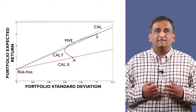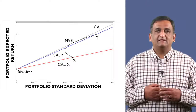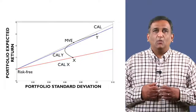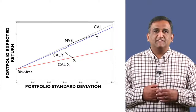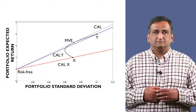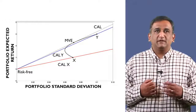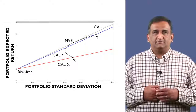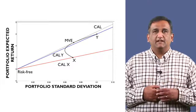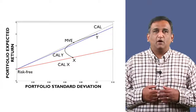We have the original mean variance frontier for X and Y — that is the black curve that runs through X and Y. Where will the risk-free asset lie on this picture? It has zero risk, so it will lie on the vertical axis. Now, how do we include the risk-free asset in our portfolio?